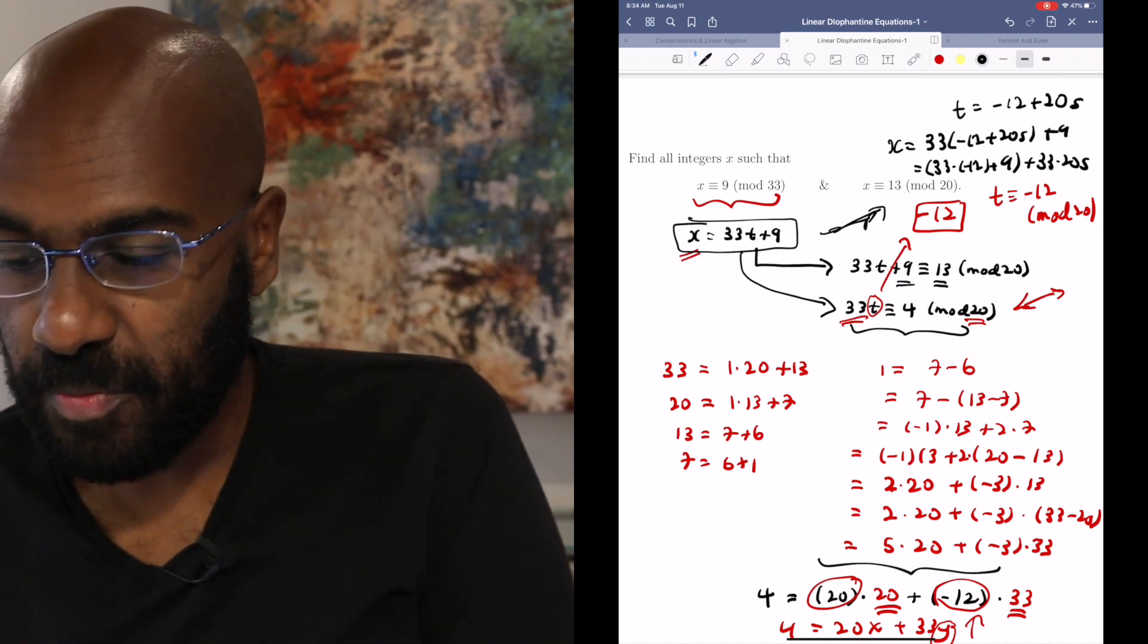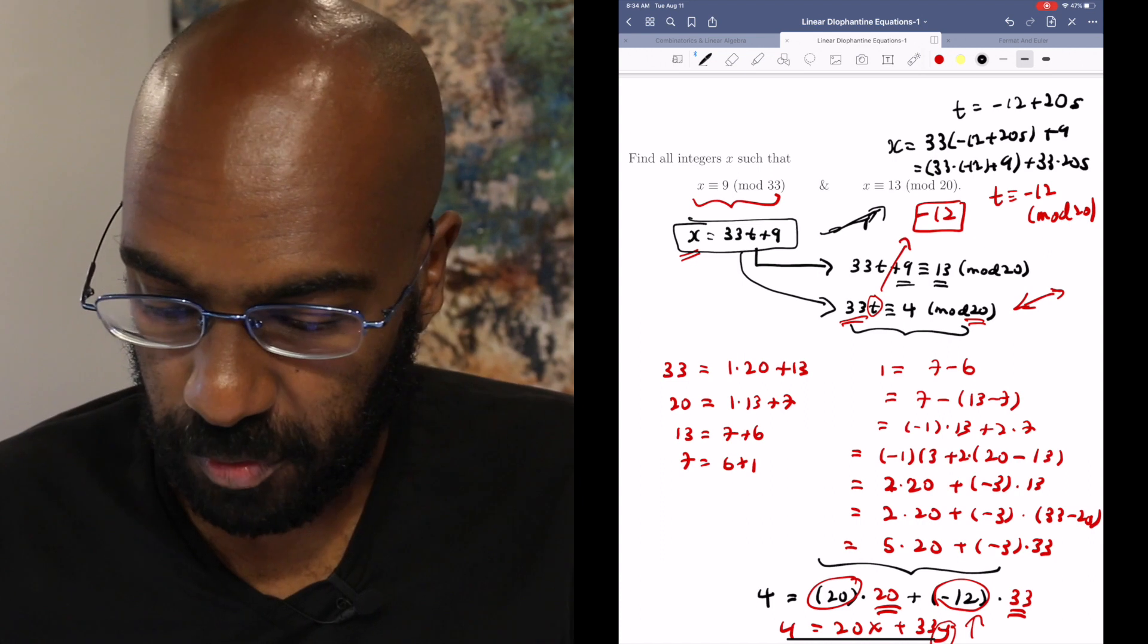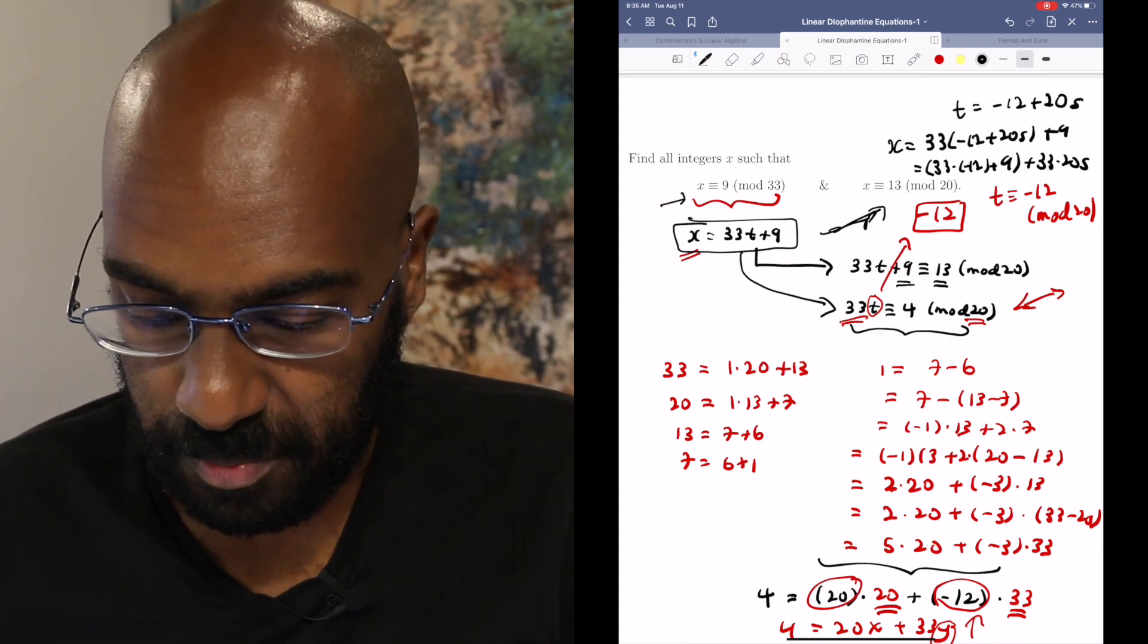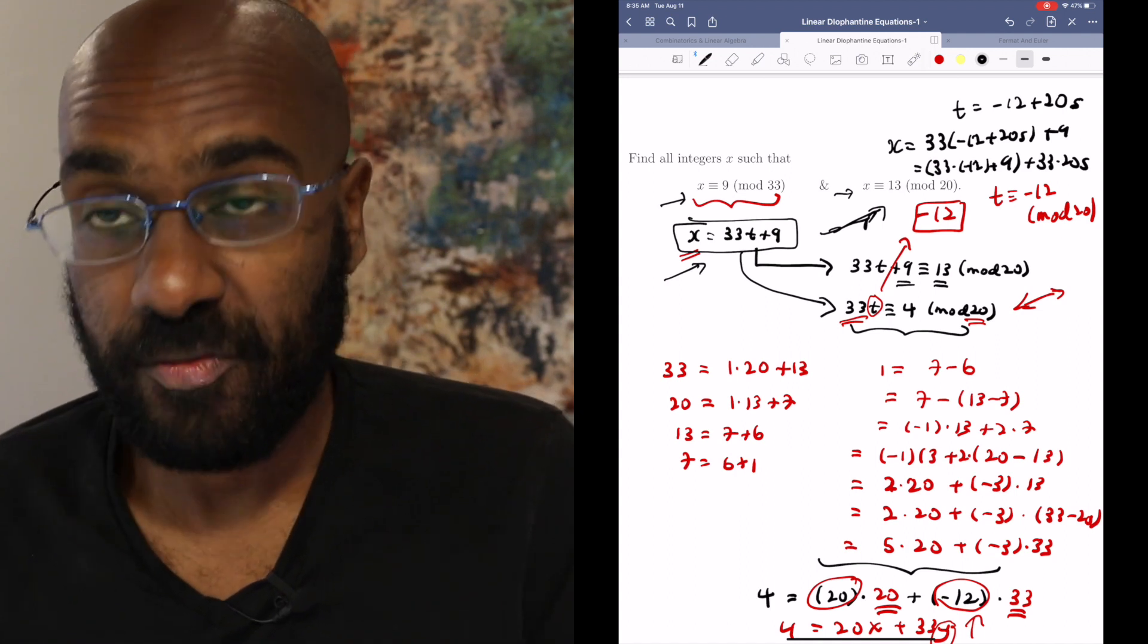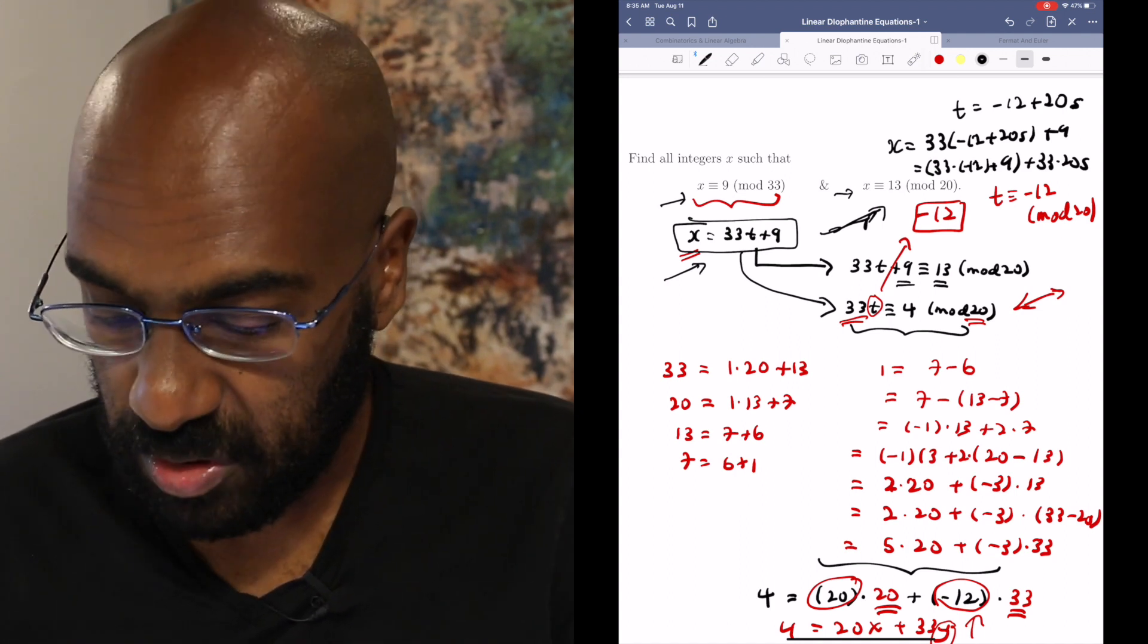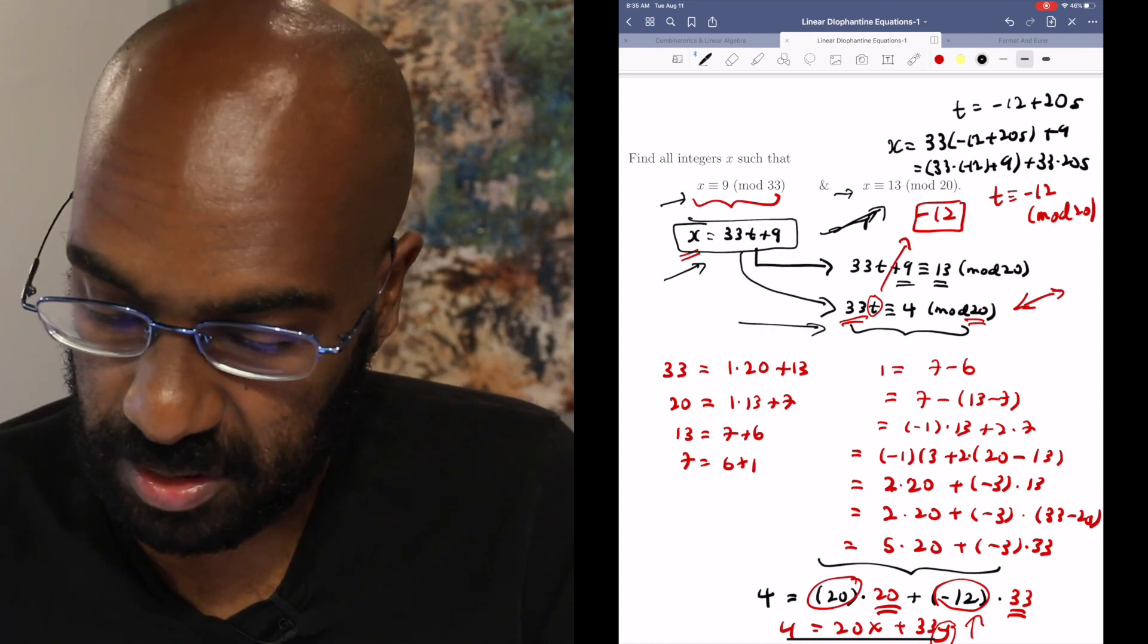So if we clean that up, it's things of the form 33 times negative 12 plus 9 plus 33 times 20s for any value of s. So what we've concluded from this process is if you have an x that satisfies both of these, x will have to look something like this quantity here, 33t plus 9 for some value of t, but also satisfy this thing here, and as a consequence, x has to look something like this.